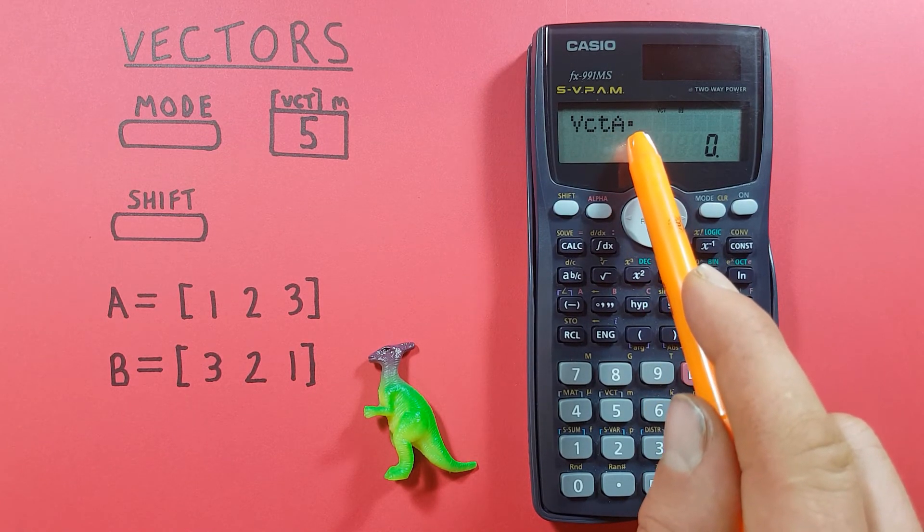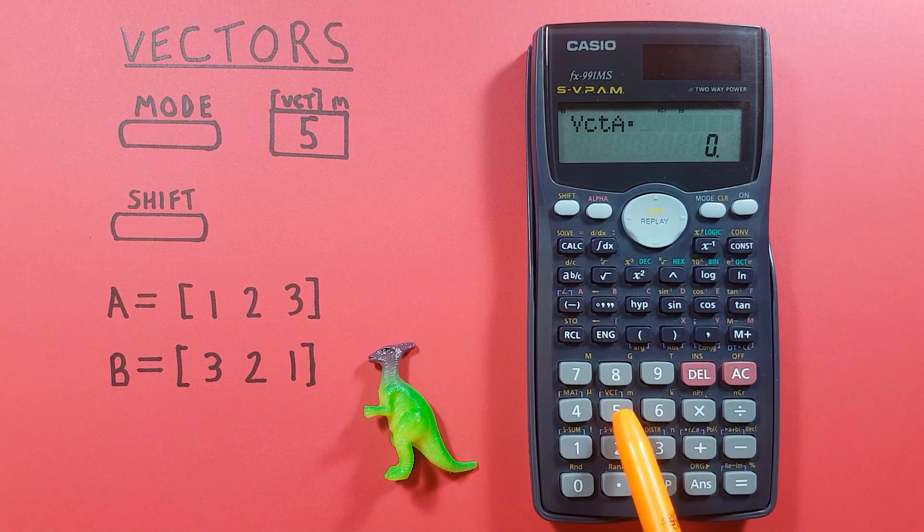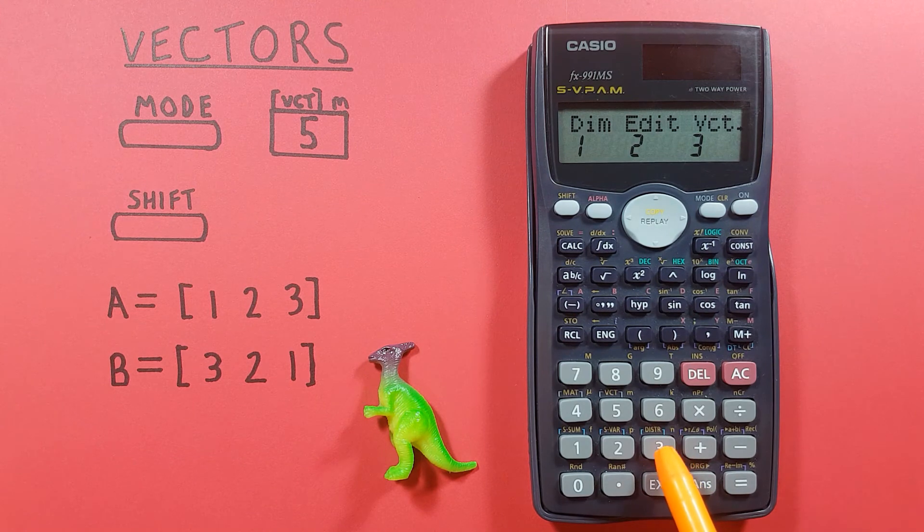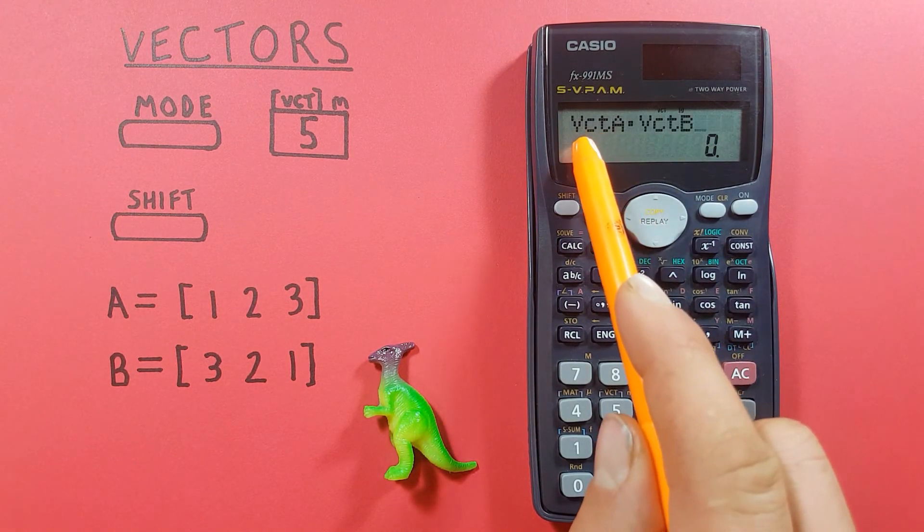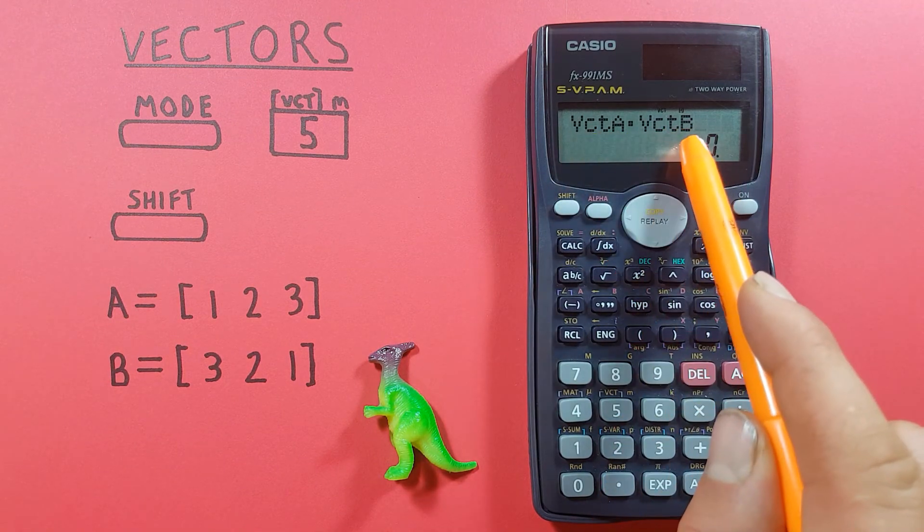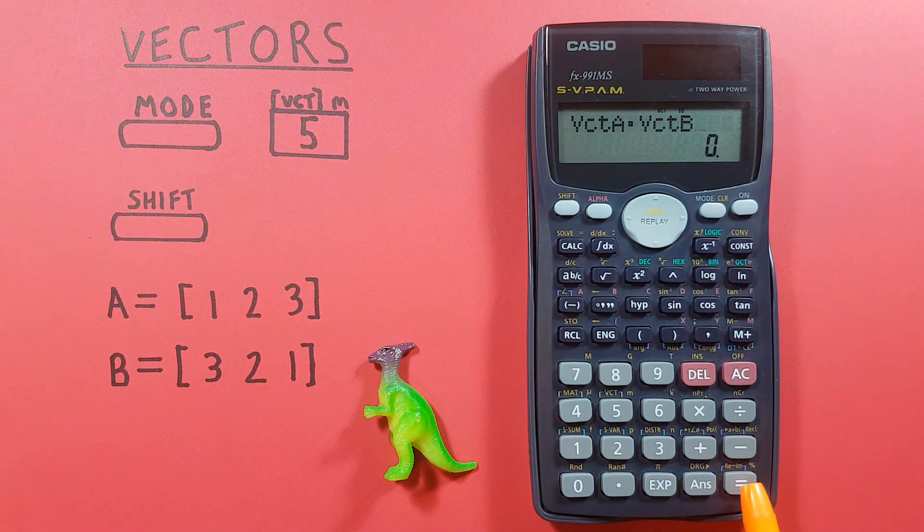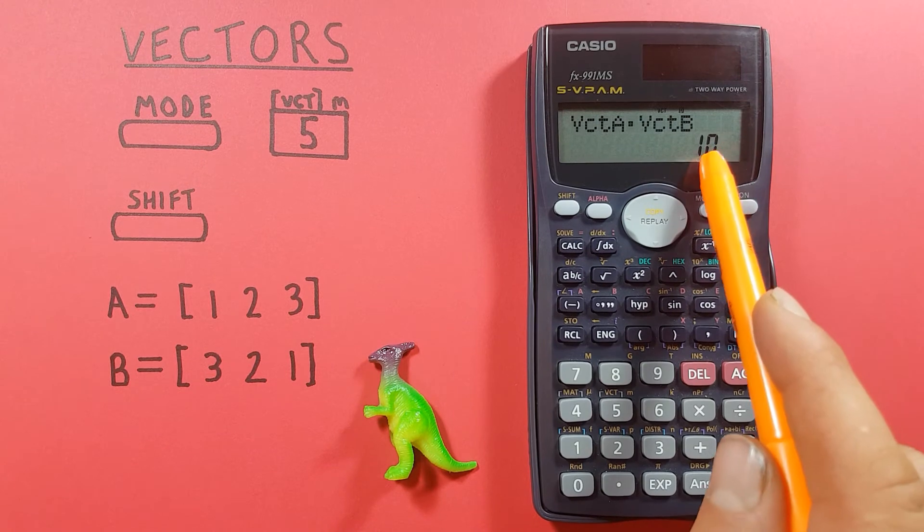Then we press shift 5 again back to our vector menu and choose our B vector. So there we have the dot product of vector A and vector B, and if we press equals you see we get an answer of 10.